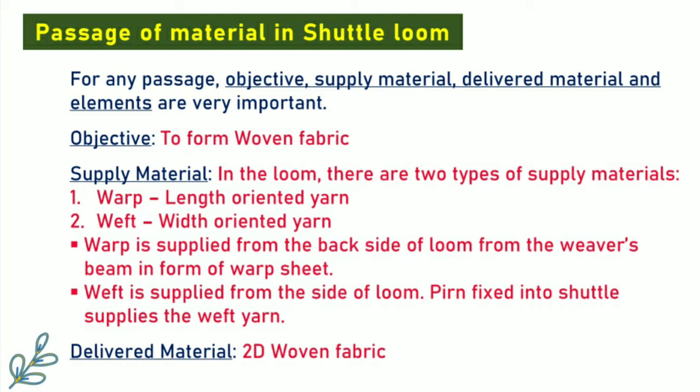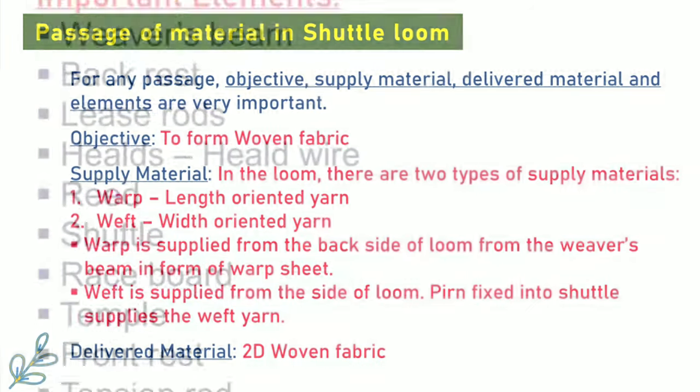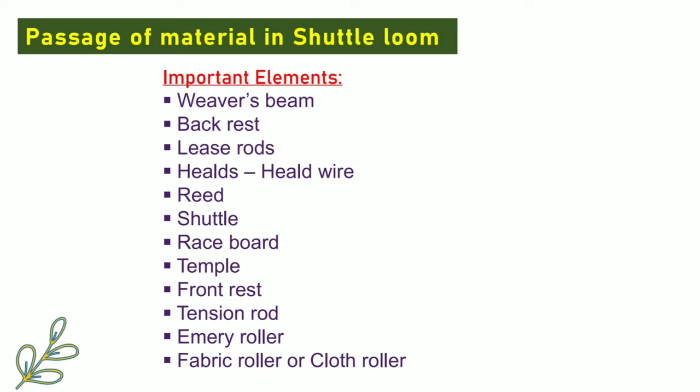Weft is supplied from the side of the loom. A pirn fixed into the shuttle supplies the weft yarn. The delivered material is a two-dimensional woven fabric. For the shuttle loom, important elements are: weaver's beam, backrest, leeze rods, healds, reed, shuttle, race board, temple, front rest, tension rod, emery roller, and fabric roller.